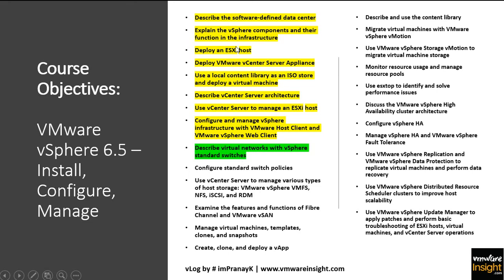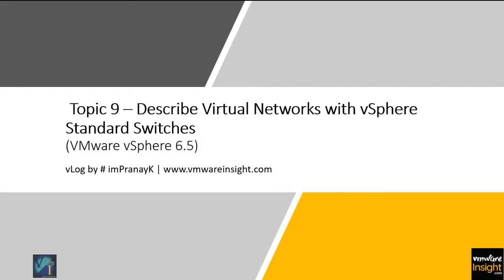In earlier modules we already deployed an ESXi host, deployed vCenter Server, and added the ESXi host to vCenter Server. When we configured the ESXi host, we also configured the management network, but for other networking we'll have to create virtual switches. This is a very interesting topic — you are going to get some benefit from this module on how to create a virtual switch and what a virtual network is. Let's jump to the theoretical part first, and once this is complete I'll also take you to the lab environment.